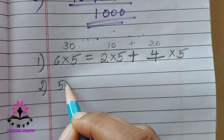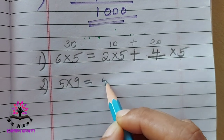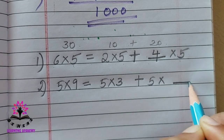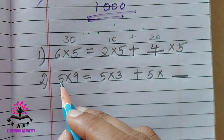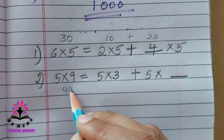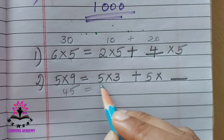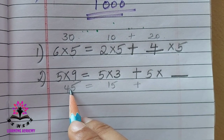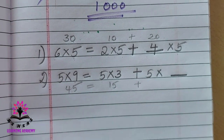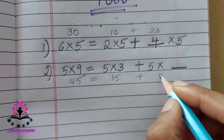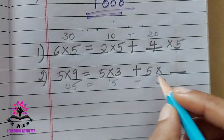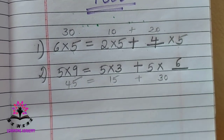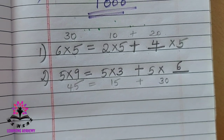See the second one: 5 into 9 is equal to 5 into 3 plus 5 into dash. 5 times 9 is 45. 5 times 3 is 15. So 45 minus 15 is 30. You need 30 more. 5 times 6 is 30. So the answer in the blank is 6.